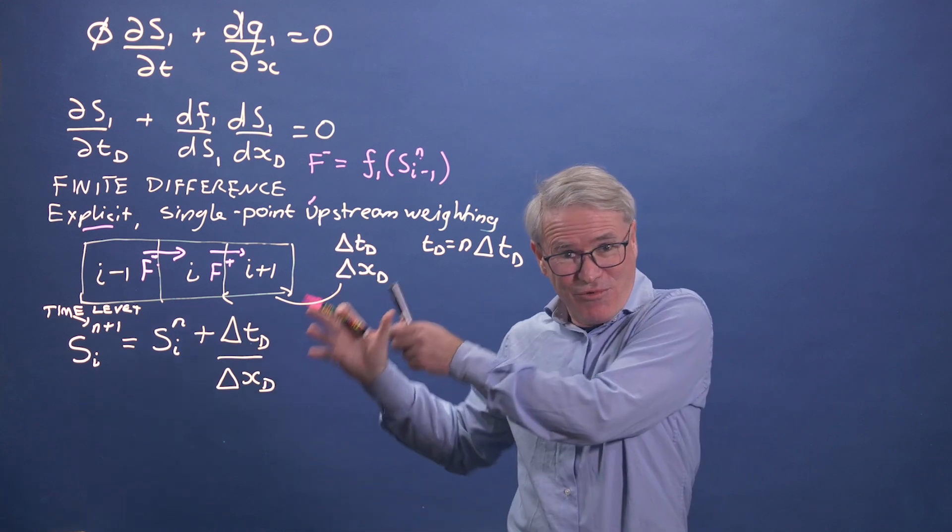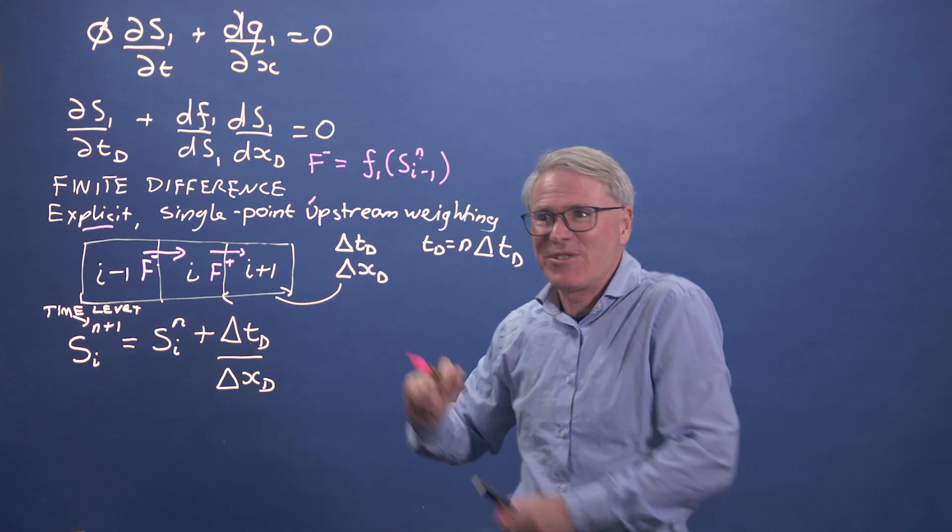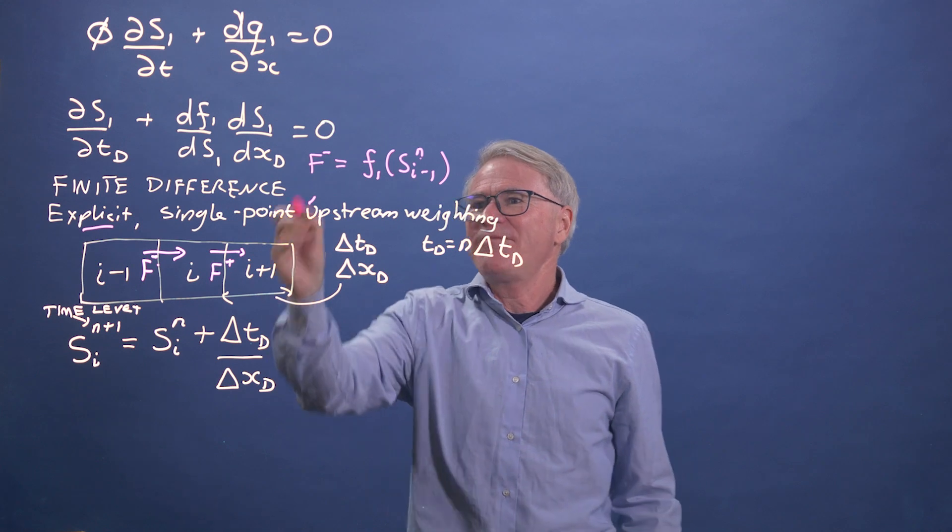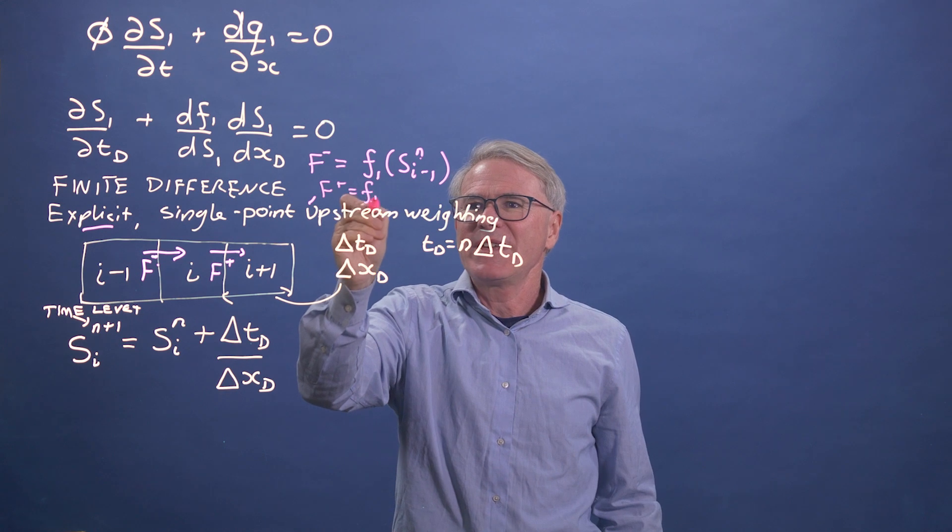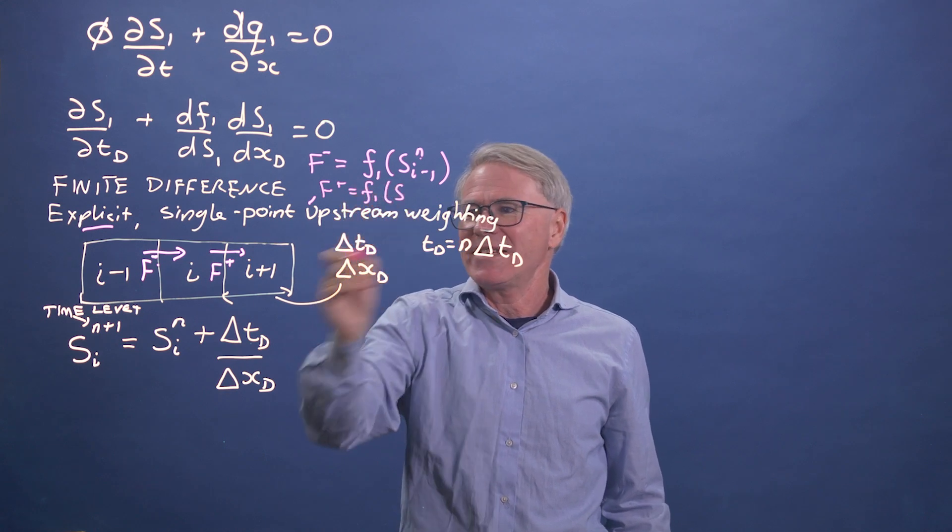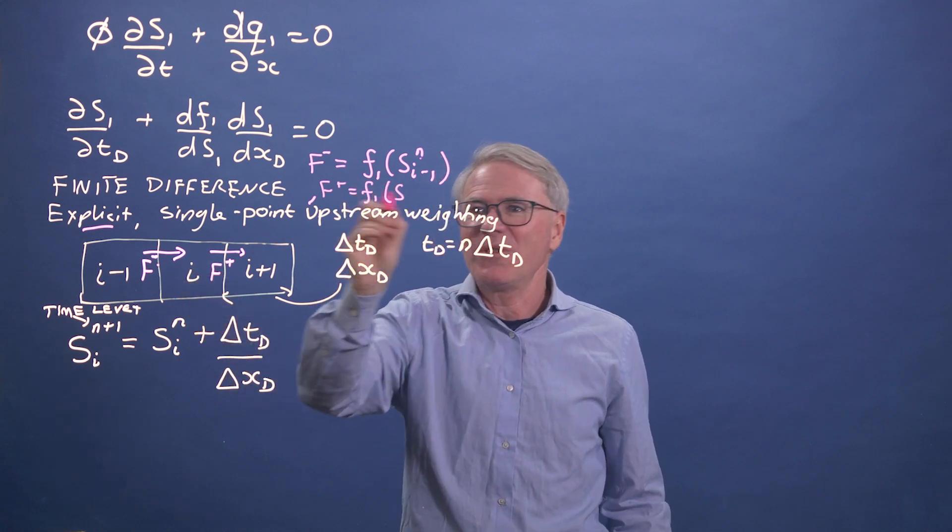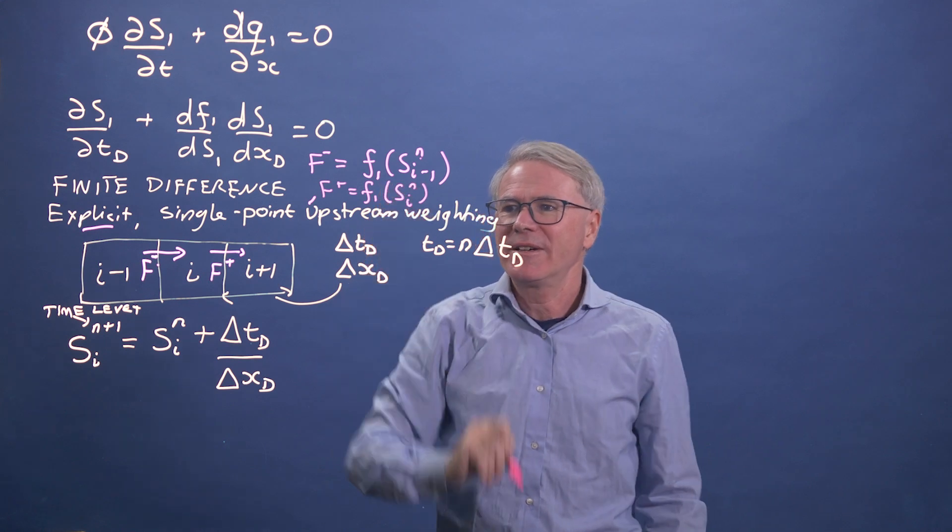So how it's updated is the previous time step from the previous grid block. And then f plus, well, then it should become straightforward. What I'm going to use for f plus is the same thing, but evaluated at this grid block, not i plus one, but i.